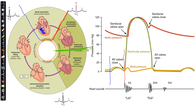We can separate the isovolumic contraction from the ejection phase when the semilunar valves open. When the semilunar valves open, we're at the ventricular ejection phase — we start to push blood out of the ventricles. As we continue squeezing the ventricles, pressure in the aorta increases as well, and we reach a maximum pressure of about 120 millimeters of mercury. That's our ejection phase.